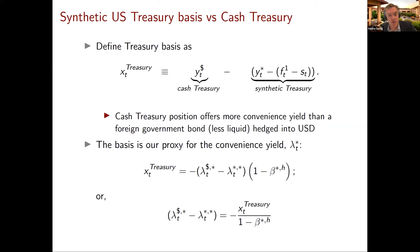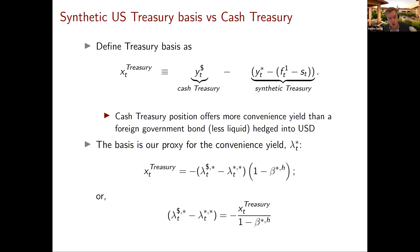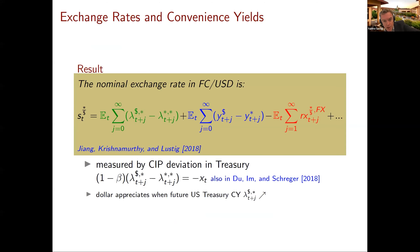You get deviations from covered interest rate parity, and that deviation helps us pin down exactly what lambda-dollar minus lambda-star is. In particular, the Treasury basis — which Wenjin will discuss in much more detail — can be defined as the difference between the yield on a cash position in Treasuries and the yield on a synthetic Treasury constructed from a German bond with the currency risk hedged. The idea is that a cash Treasury position, from the perspective of a German investor, offers more convenience yield than a foreign government bond, and the basis reflects that.